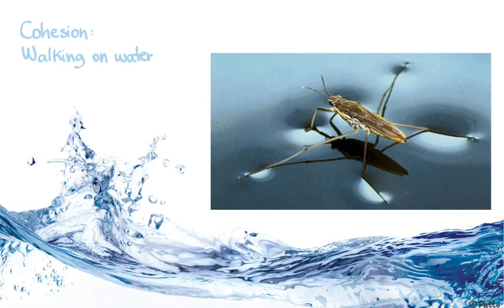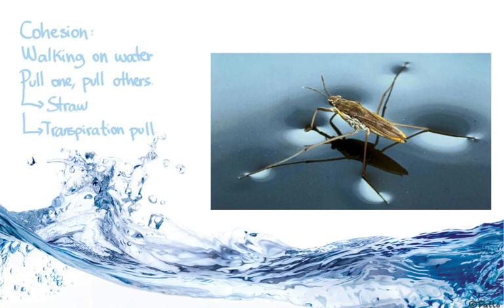It allows some animals, small animals like insects, to walk on water. It allows as well for us to pull one molecule and pull other molecules just behind it. If we pull through a straw, we create suction and pull one water molecule, we pull others. And the same happens with the transpiration pull in plants.